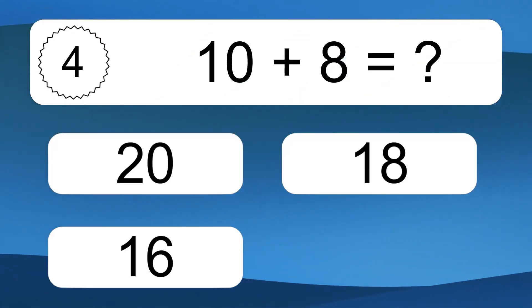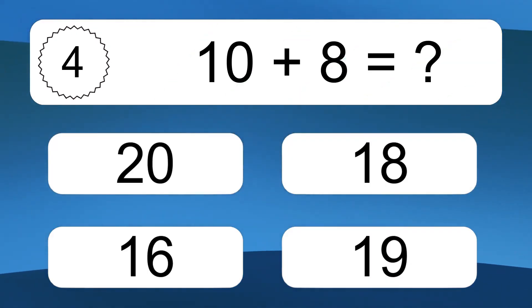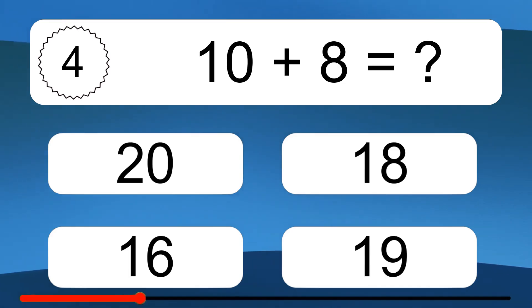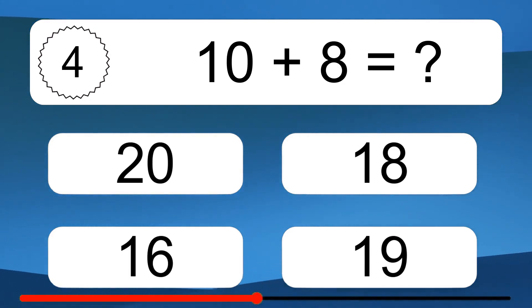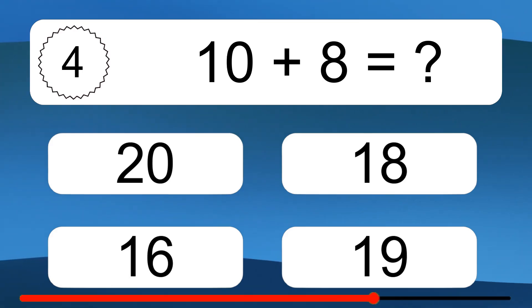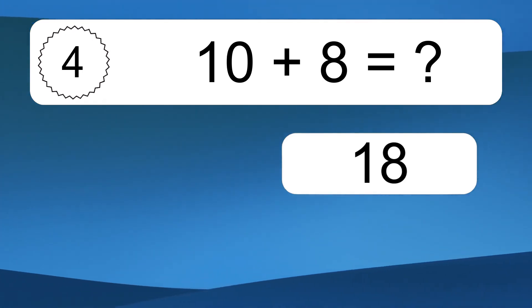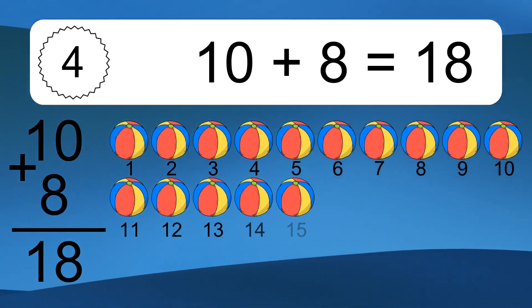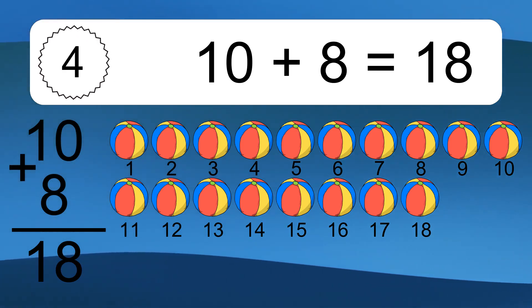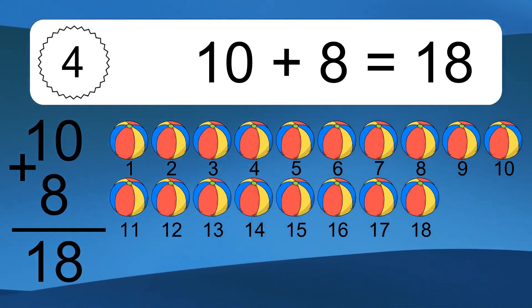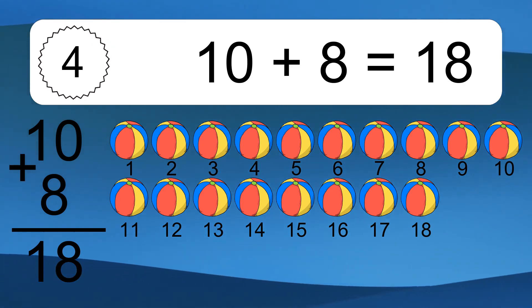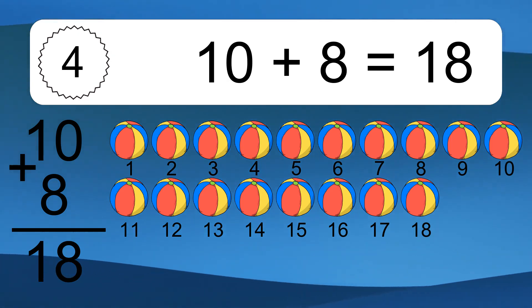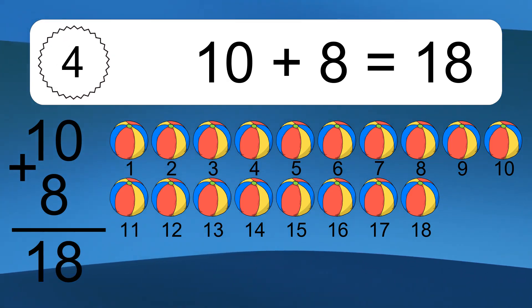10 plus 8 equals what? 10 plus 8 equals 18. Let's count it. 1, 2, 3, 4, 5, 6, 7, 8, 9, 10, 11, 12, 13, 14, 15, 16, 17, 18.